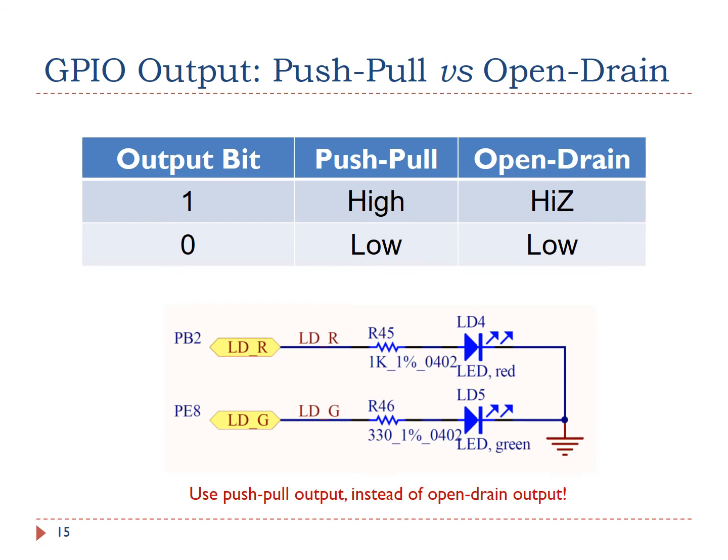In this example, we need to provide a high voltage on the output pin in order to turn on the LED. Therefore, we have to select the push-pull output, instead of the open-drain output.